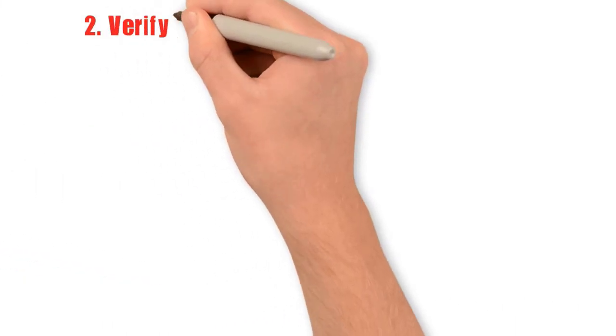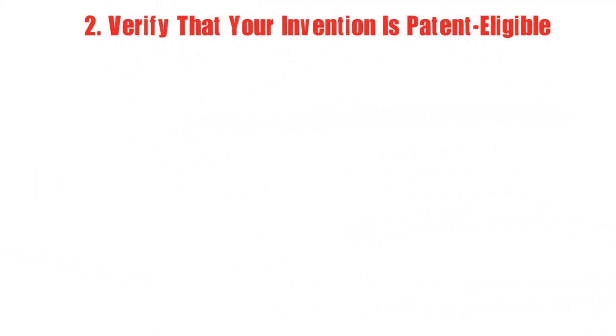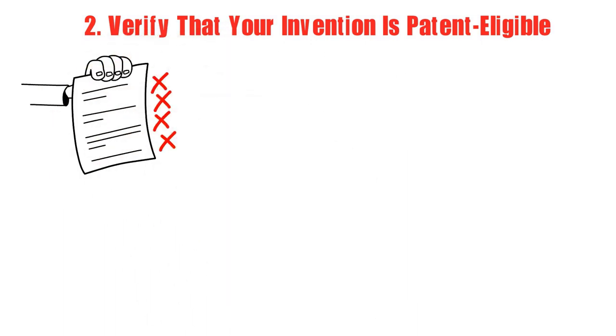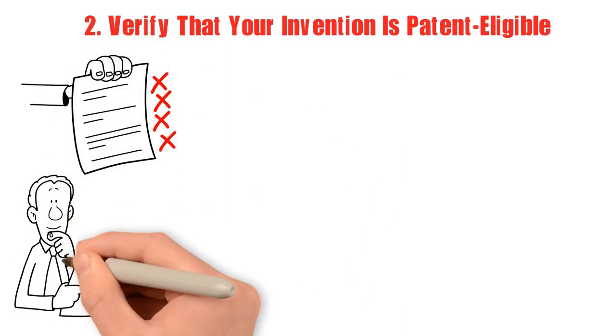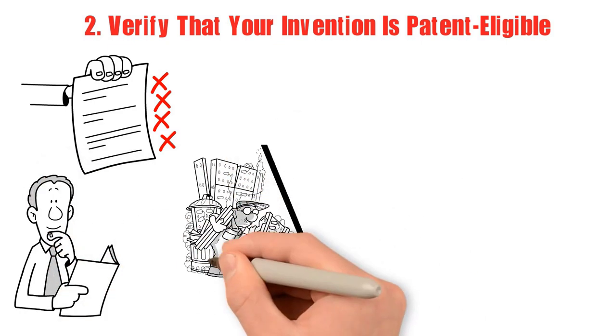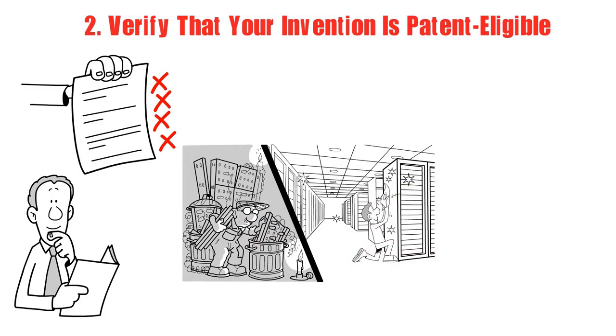2. Verify that your invention is patent-eligible. You cannot just apply for a patent based on a concept. Your invention must be demonstrated in action. Your work must also be brand new. This implies that it must differ significantly from all other inventions in that sector.